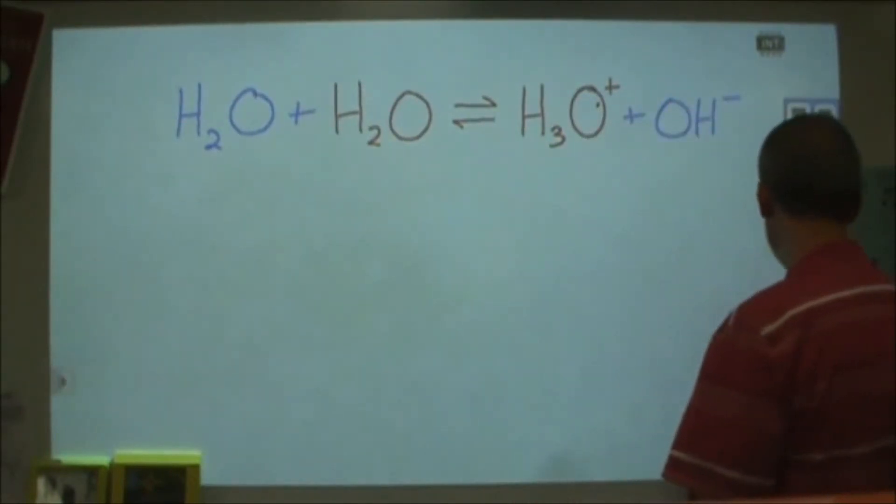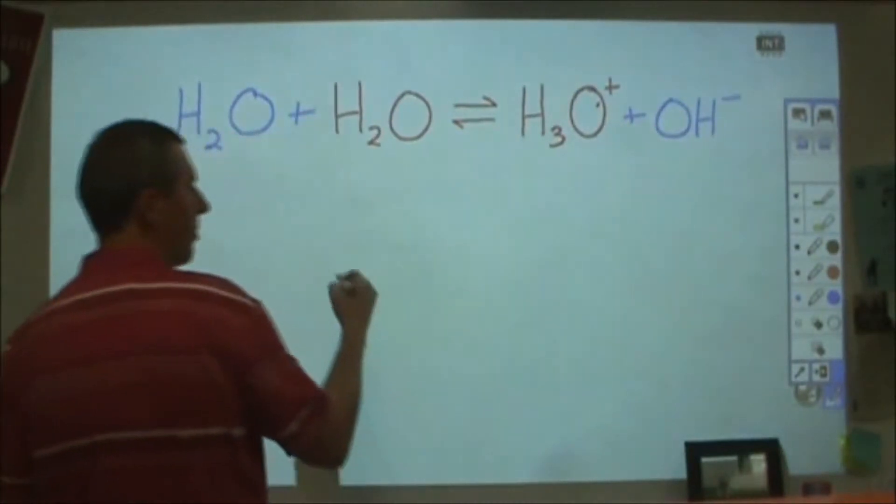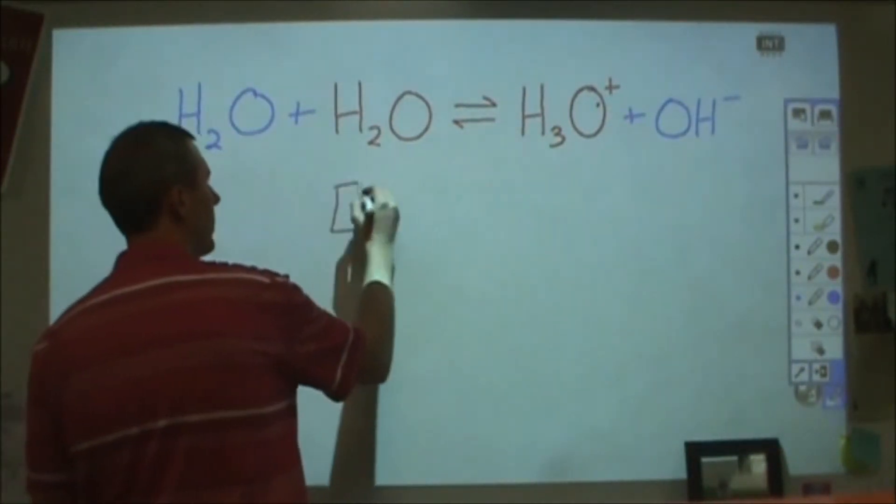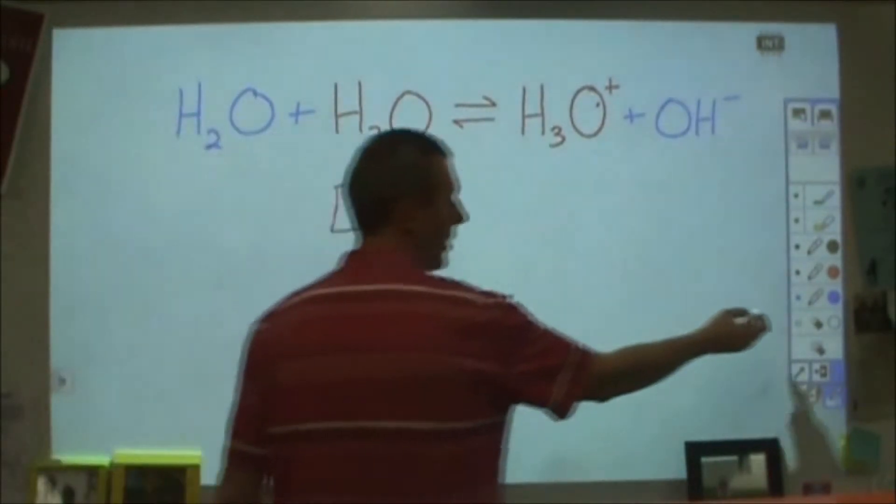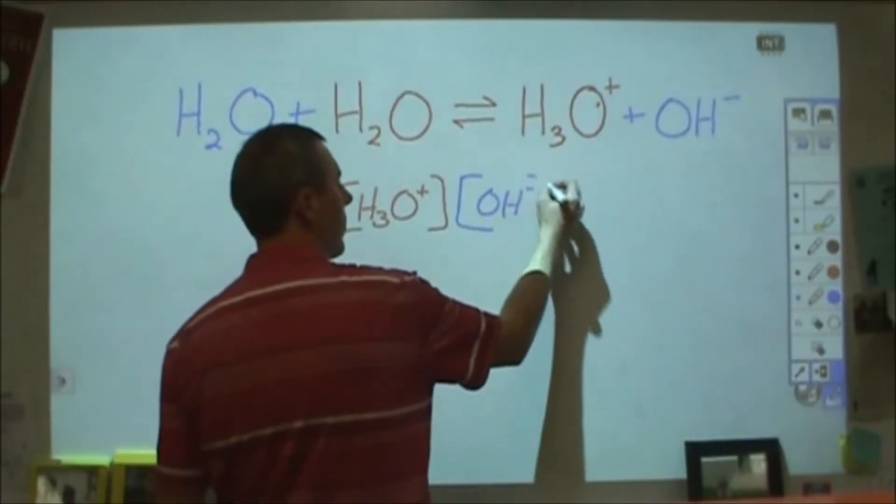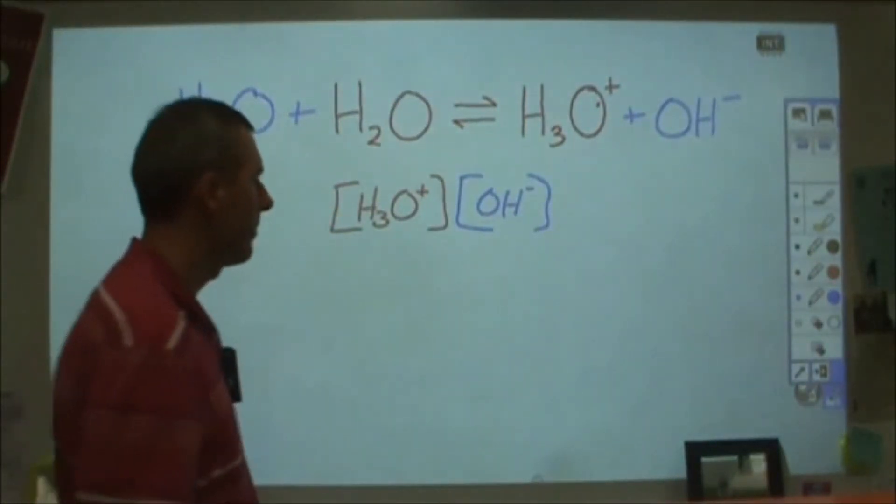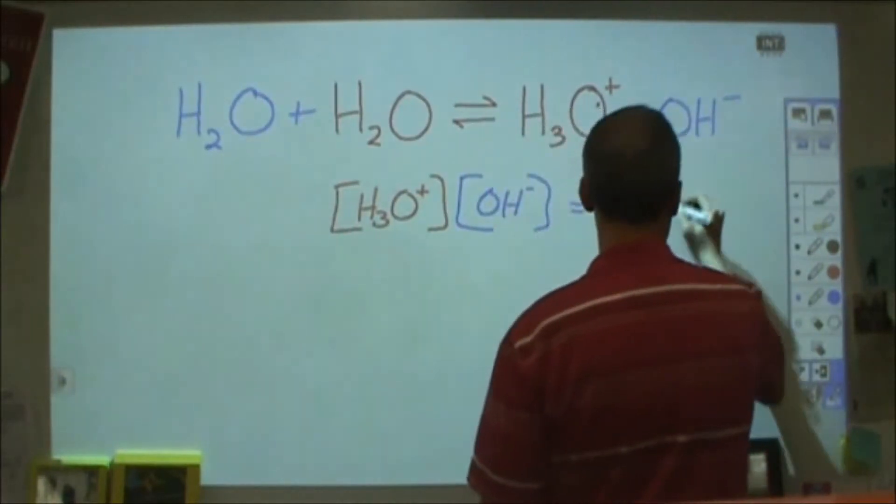What's interesting about this is that the amounts of these build to a point where they always multiply and give the same number if you multiply their concentrations. If I multiply the concentration of hydroxide and H₃O⁺, as long as I'm at a reasonable temperature, they're going to come out to be the same number, which is 10 to the minus 14th power.